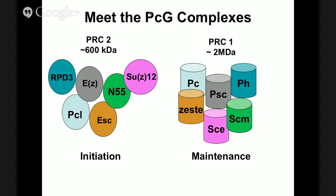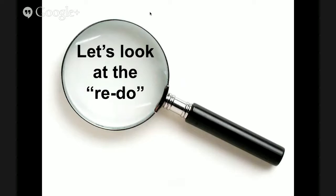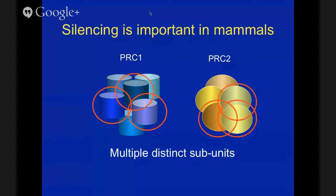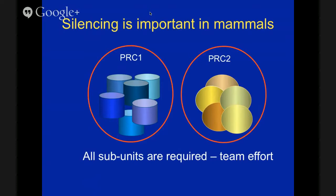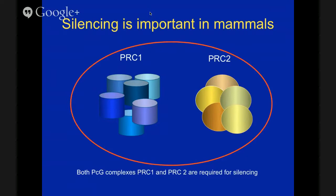We also need to think about color choices. Colors that are very similar can imply a relationship that doesn't exist. The author told me the left ones are circles and the right ones are cylinders, so of course they're not related — but that wasn't immediately obvious. We need an intelligent other — someone who can look at your slides and think about it with fresh eyes. In the redo, we changed the title to the most important point: silencing is important in mammals. We simplified the diagrams and showed that multiple subunits are distinct in each of PRC1 and PRC2, all subunits are required, and both complexes are required for silencing.